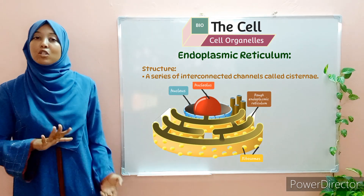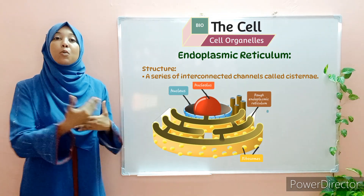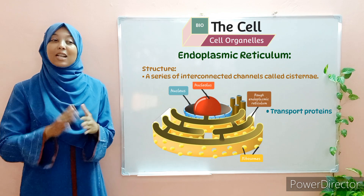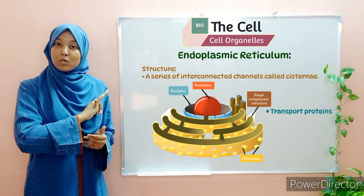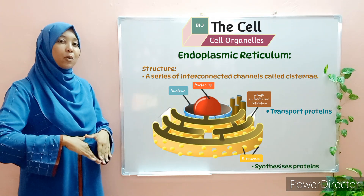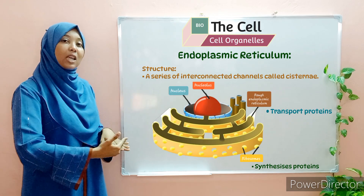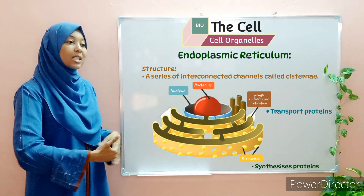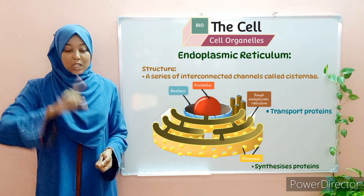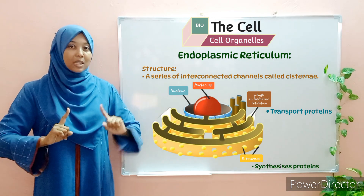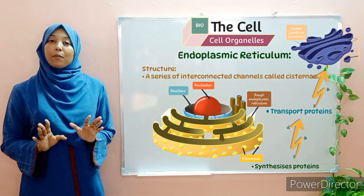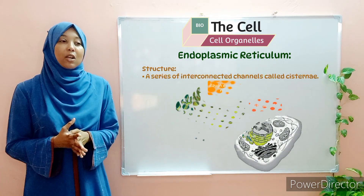Ribosomes are organelles discussed in part one of this video; their function is to manufacture proteins. The ribosomes essentially manufacture proteins and then pass them on to the rough ER. The function of the rough ER is then to transport these proteins to the Golgi bodies. So ribosomes manufacture proteins, pass them to the rough endoplasmic reticulum, which then transports these proteins to the Golgi bodies.